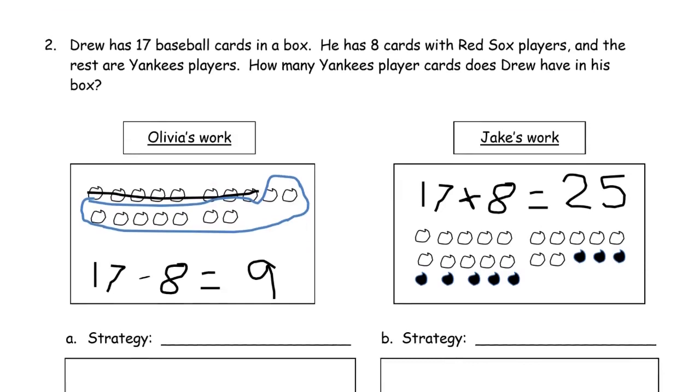Next page. Drew has 17 baseball cards in a box. He has 8 cards with Red Sox players. And the rest are Yankees players. How many Yankees player cards does Drew have in his box? So here's Olivia's work. She's got 17 minus 8 equals 9. And she drew 1, 2, 3, 4, 5, 6, 7, 8, 9, 10, 11, 12, 13, 14, 15, 16. So she drew 10. And then she drew 7. 10, 7. That's 17. So she has what she's supposed to have. She crossed out 8, 5, and 3 more. She crossed out 8. And then she just counted what's left. Alright, now let's look at Jake's work. So this looks fine. So we'll have to find another strategy to solve for that.